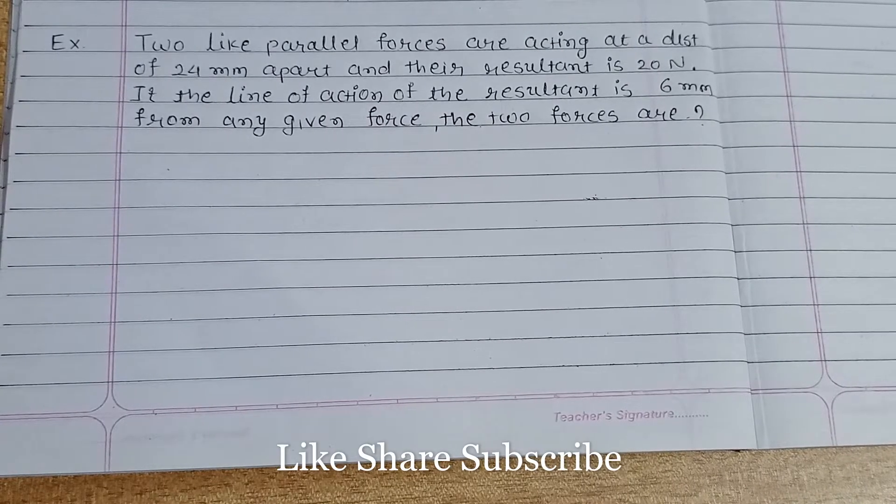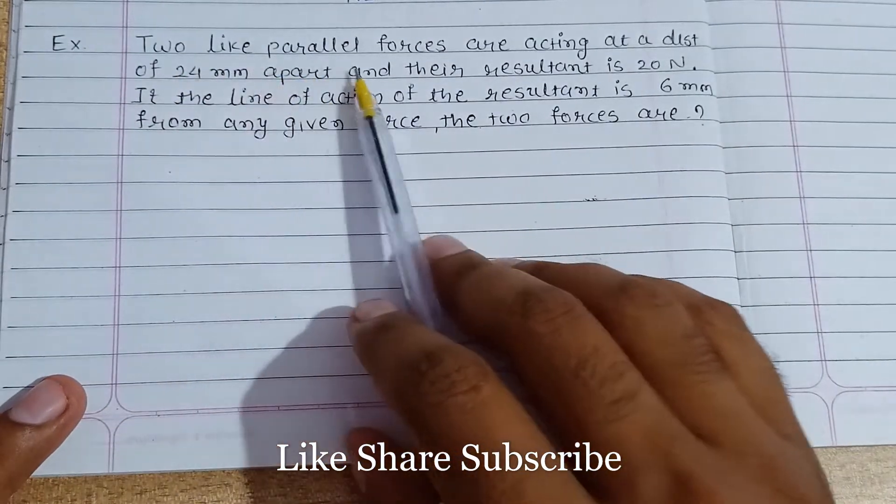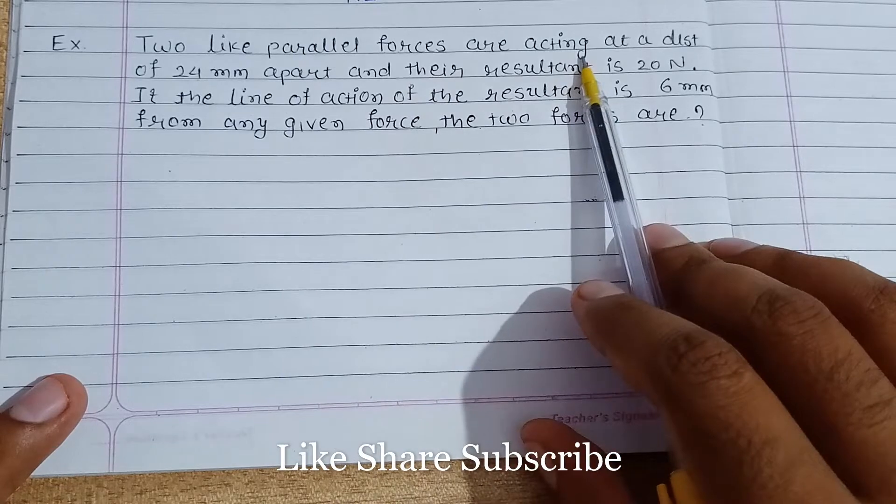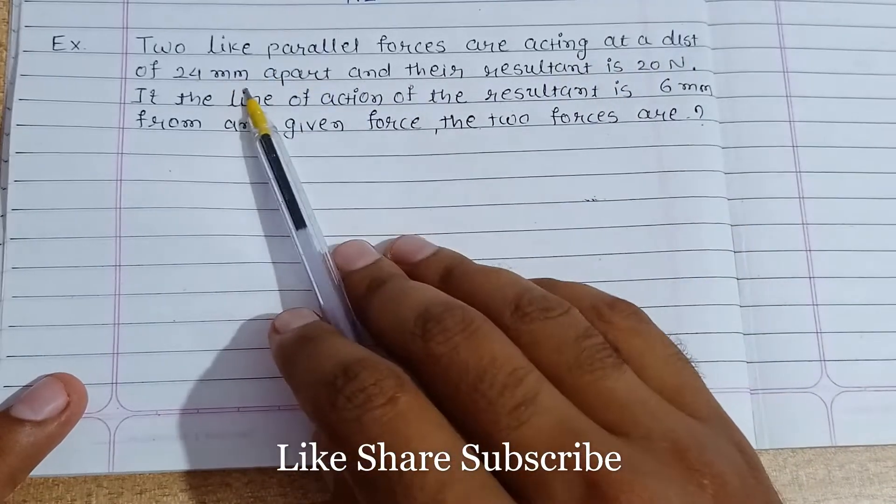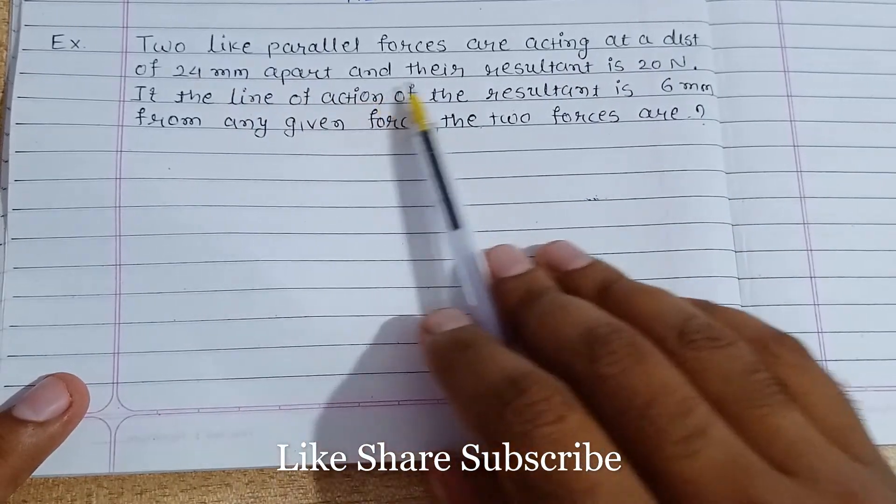Hello friends, welcome back to the channel. In this video we will solve one problem related to engineering mechanics. Let's read the problem statement: two like parallel forces are acting at a distance of 24 mm apart and their resultant is 20 newton.